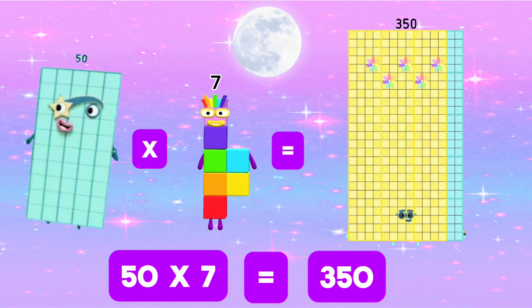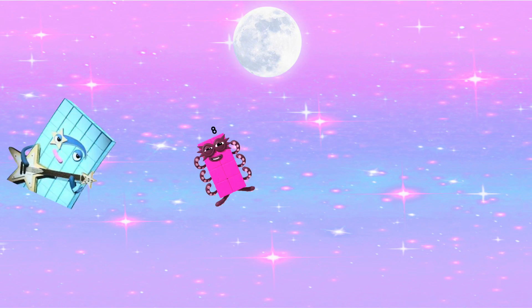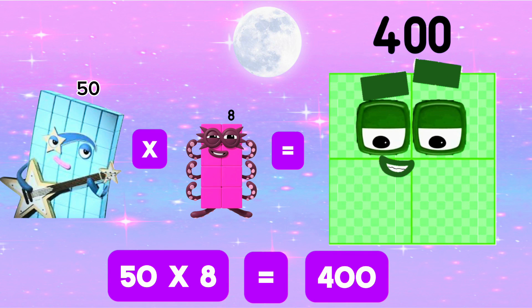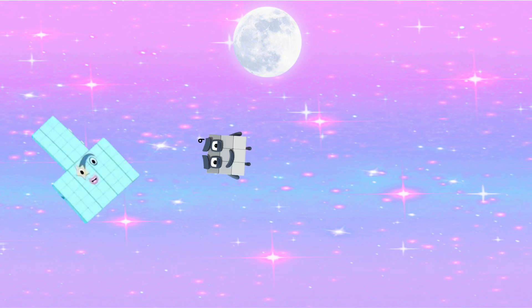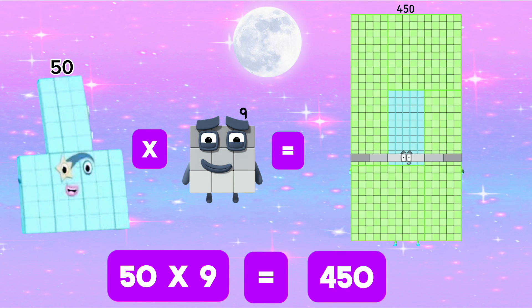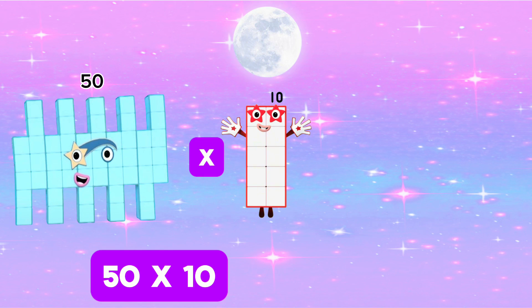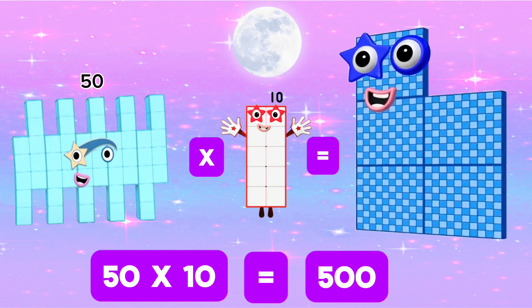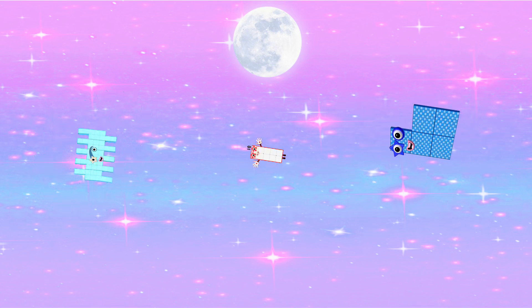350. 50 times 8 is equals 400. 50 times 9 is equals 450. 50 times 10 is equals 500.